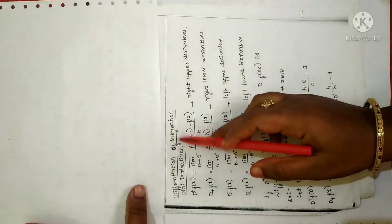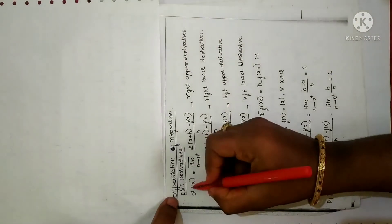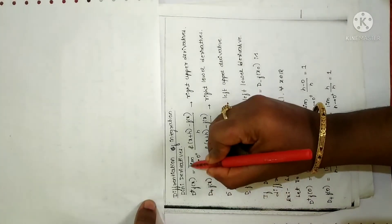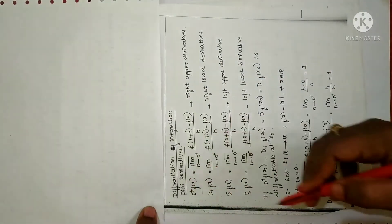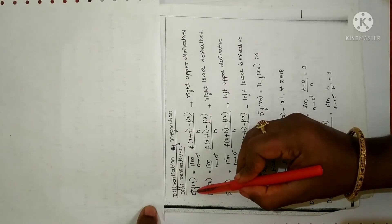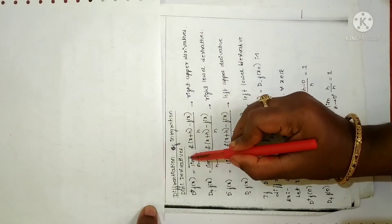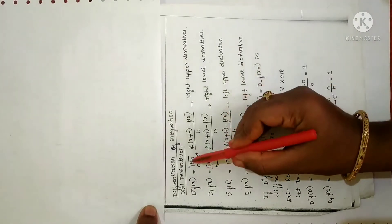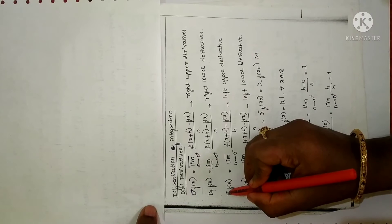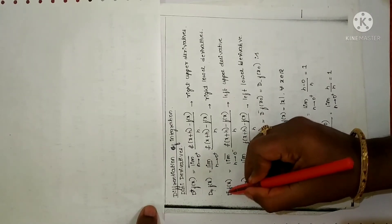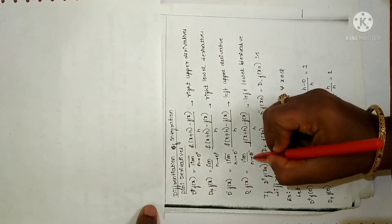The next concept is differentiation of integration or Dini derivatives. Only a brief introduction is given — you only need to memorize the definitions. The right upper derivative is represented as D⁺f(x) and is defined as the limit superior as h tends to 0⁺ of [f(x + h) − f(x)] / h. When plus is above D it is the right upper derivative; when plus is below D it is the right lower derivative — the definition remains the same but superior changes to inferior. Similarly, when minus is above D it is the left upper derivative; when minus is below D it is the left lower derivative. Superior and inferior interchange accordingly.